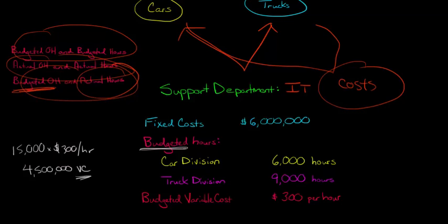Now we add the budgeted variable costs to the fixed costs: $6 million plus $4.5 million gives us our total budgeted costs of $10.5 million. This is our cost pool.